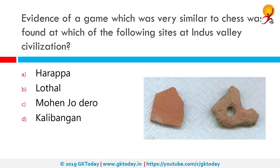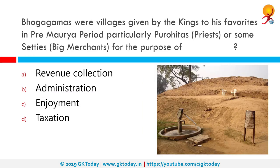Evidence of a game very similar to chess was found at which of the following sites of the Indus Valley Civilization? The correct answer is Lothal. A complete set of terracotta game pieces has been found in Lothal — animal figures, pyramids with ivory handles, and castle-like objects very similar to the chess set of Queen Harpshepsut in Egypt.